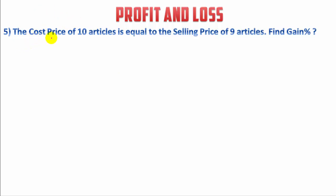Now, fifth question: the cost price of 10 articles is equal to the selling price of 9 articles, and we have to find the gain percentage. In the previous question we found the loss percentage, but now we have to find the gain percentage. It is given that the cost price of 10 articles is equal to the selling price of 9 articles.